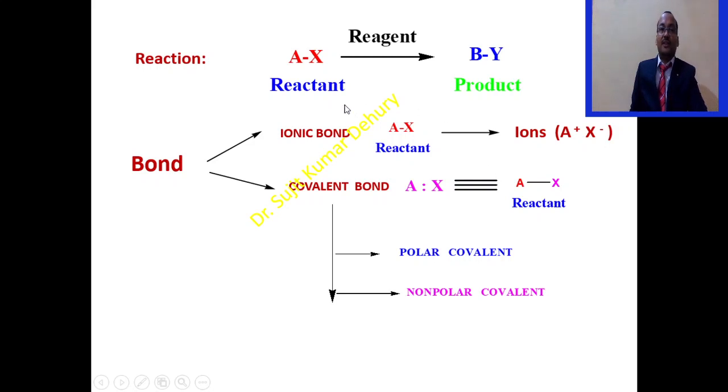So this is the simple reaction A-X giving rise to product B-Y in the presence of reagent. Usually the A-X contains a bond. When the reactant A-X contains the ionic bond, they will simply exist as ions: A plus X minus or A minus X plus.